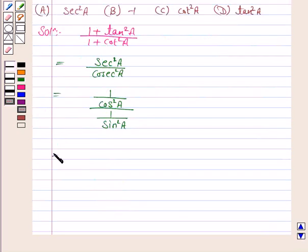So this is equal to 1 upon cos square A into sin square A upon 1.